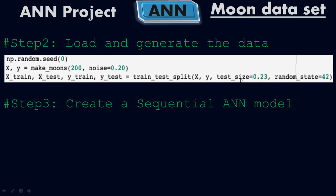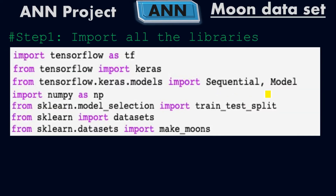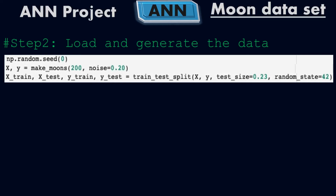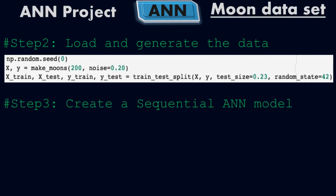Step three is to create the sequential ANN model. Because we imported the Sequential model, we need to create a sequential artificial neural network — not a functional one. The process of deep learning and machine learning are almost the same; we follow the same general procedure. This code is done in Colab, but you can use Jupyter or Visual Studio.